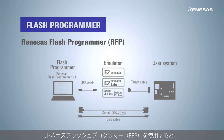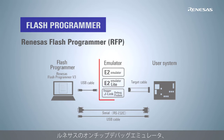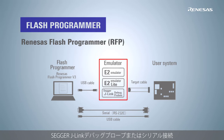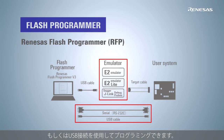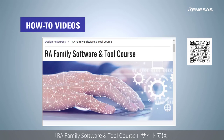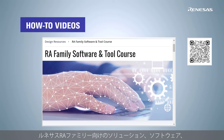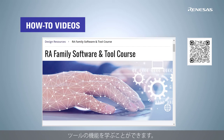The Renesas Flash Programmer enables you to program via E2 Emulator, E2 Emulator Lite, Segger J-Link debug probes, or a serial or USB connection. In the RA family software and tool course site, users can learn the features of solutions, software, and tools for the Renesas RA family.